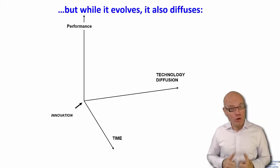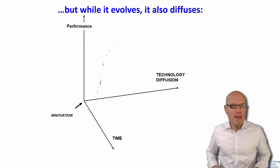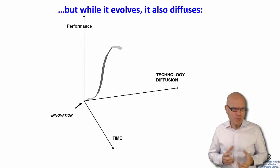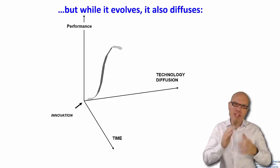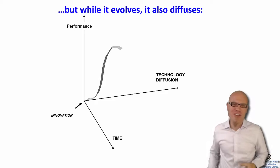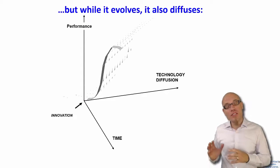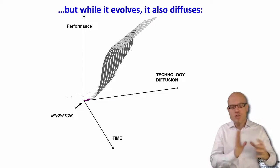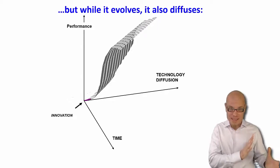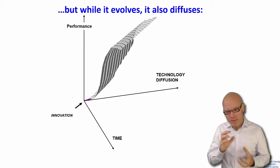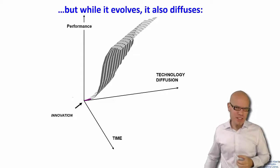One refers to progress — for example, technology gets better according to some kind of performance indicator. That's a process that alternates between continuous and disruptive innovations. And the other one refers to the diffusion of the technology through society. So these are two independent, standalone processes, but they have interesting trade-offs with each other.